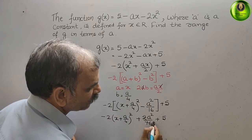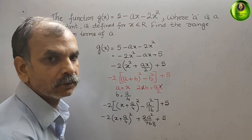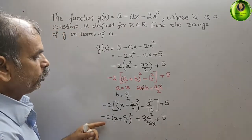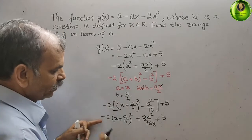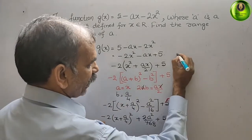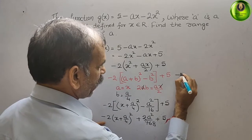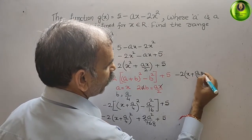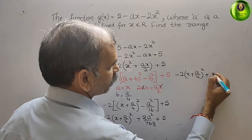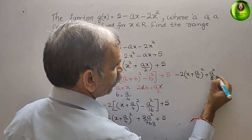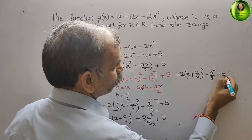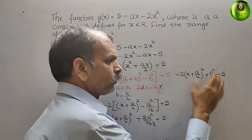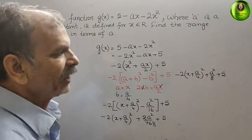2 and 16 simplify to give 8. So the final expression is: g(x) = minus 2 times (x + a/4)² plus a²/8 plus φ. This is the final form we have got.